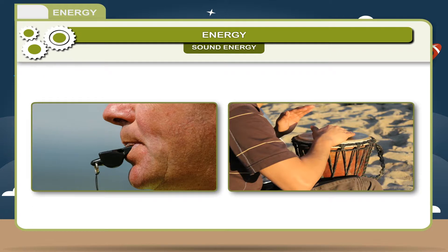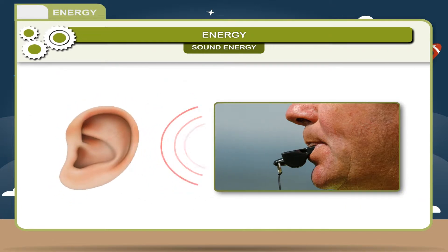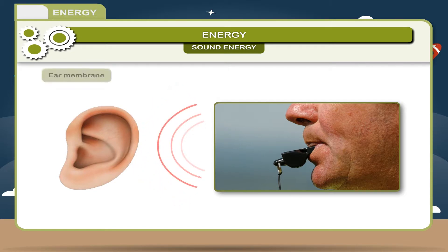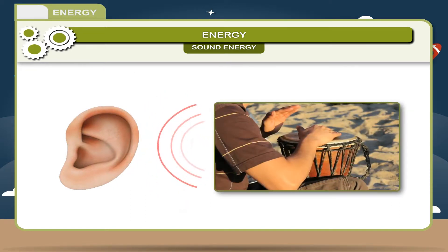All vibrations may not produce sound. When a whistle is blown, it produces vibration and we are able to hear the sound. When sound waves strike the ear membrane, it begins to vibrate and produces a sensation of hearing. If you strike a drum, its membrane vibrates and produces a sound.